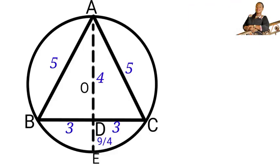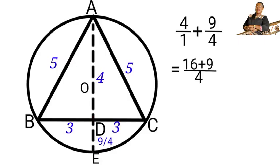So AD equals four, DE equals nine over four. The diameter of this circle is AE. To find the total length of AE, we are to add AD to DE to have the diameter. When we add, we have 4 over 1 plus 9 over 4, which equals 16 plus 9 over 4. When we add that, AE, which is the diameter, will be equal to 25 over 4.